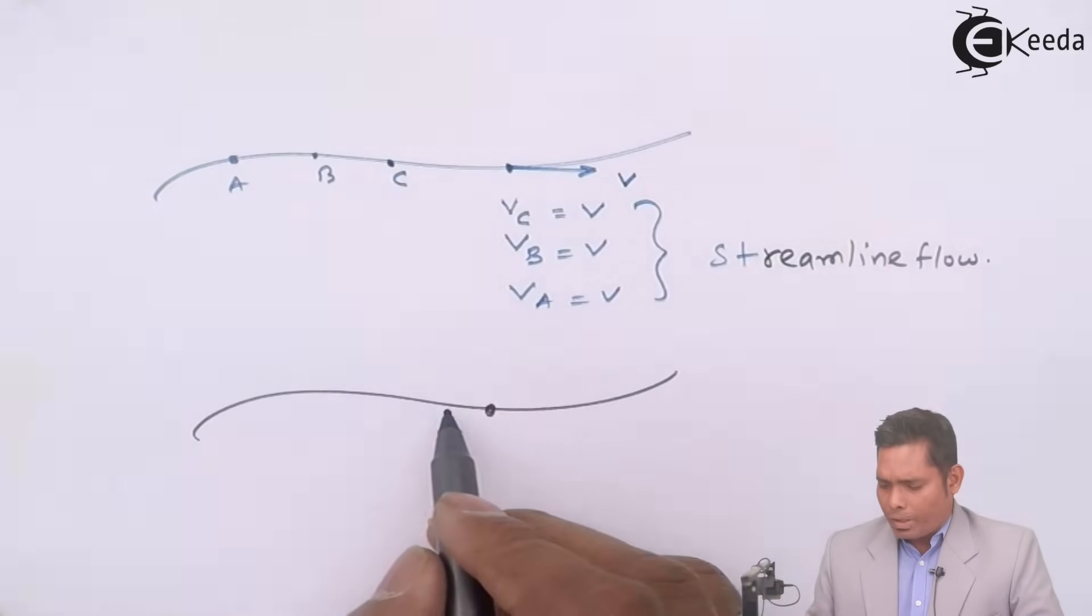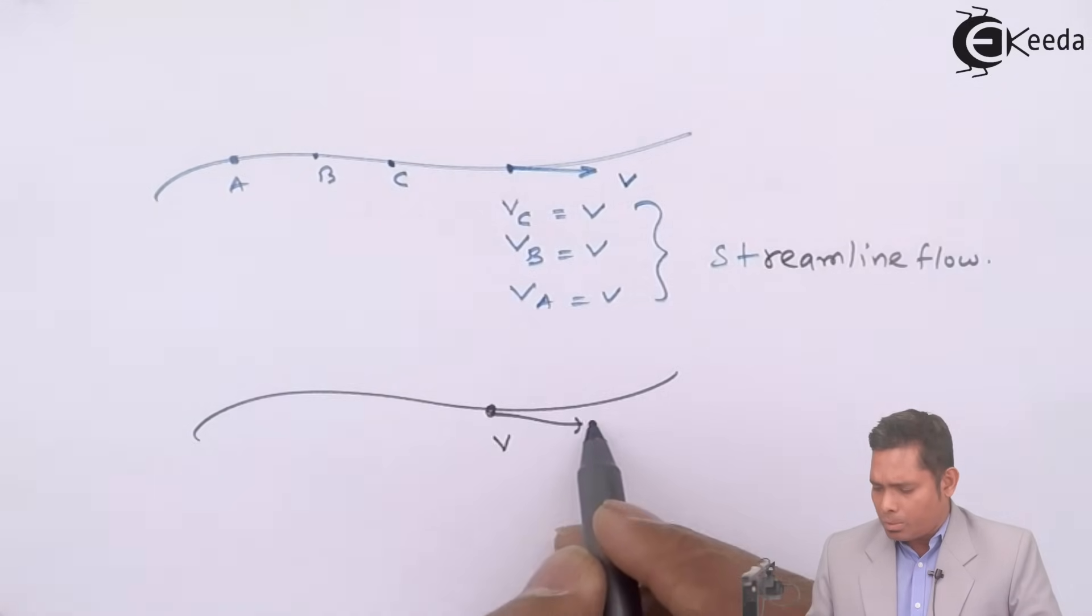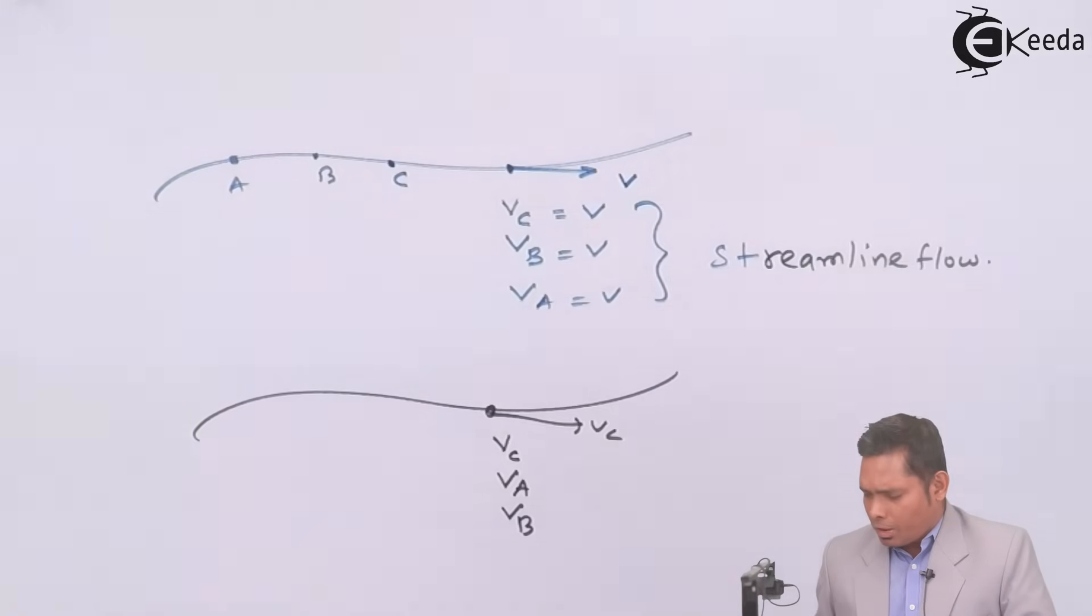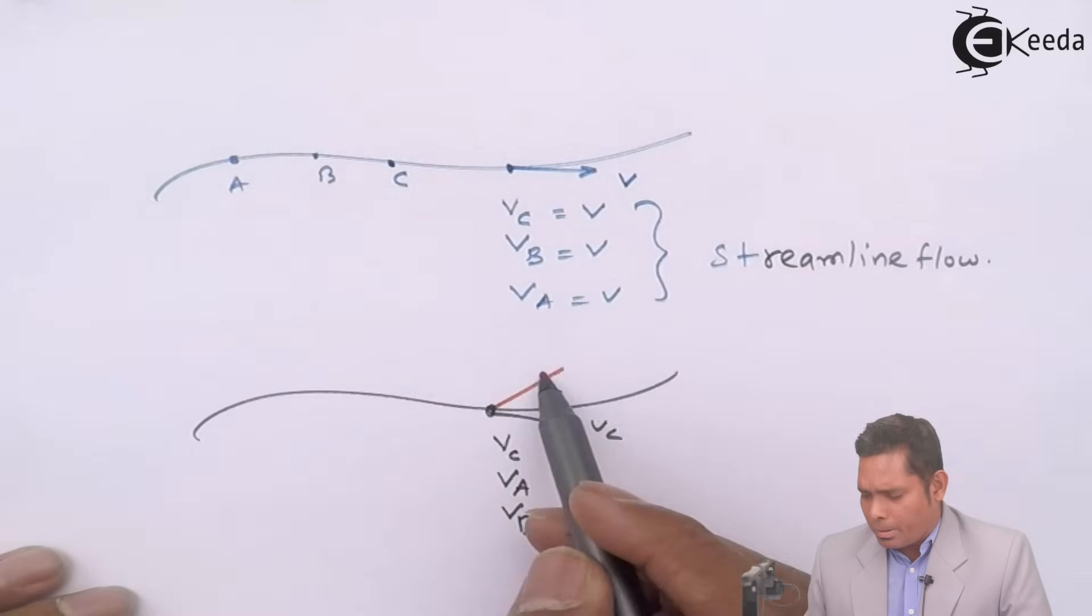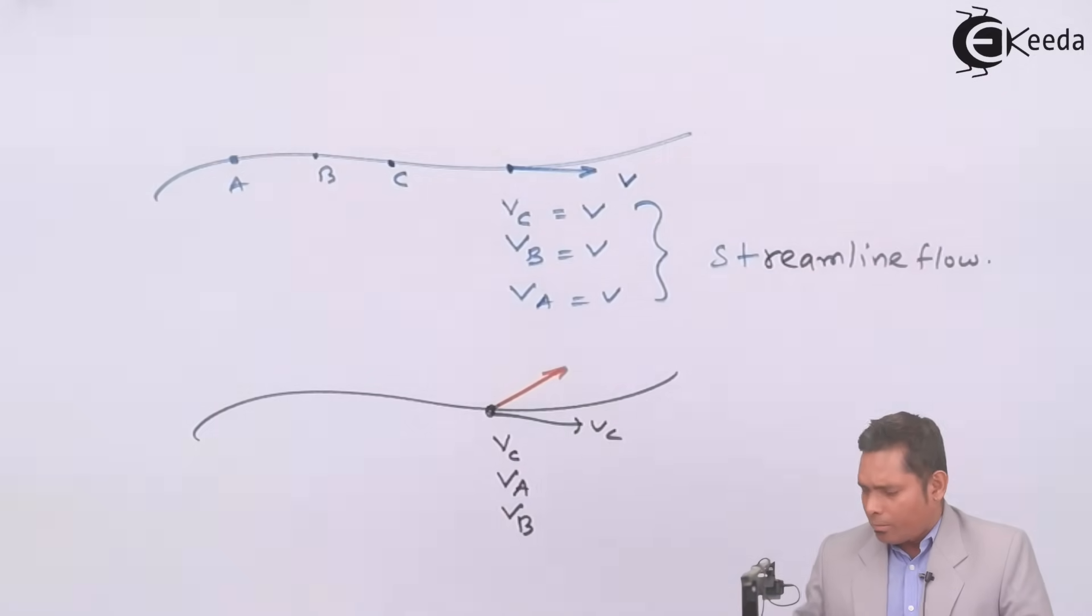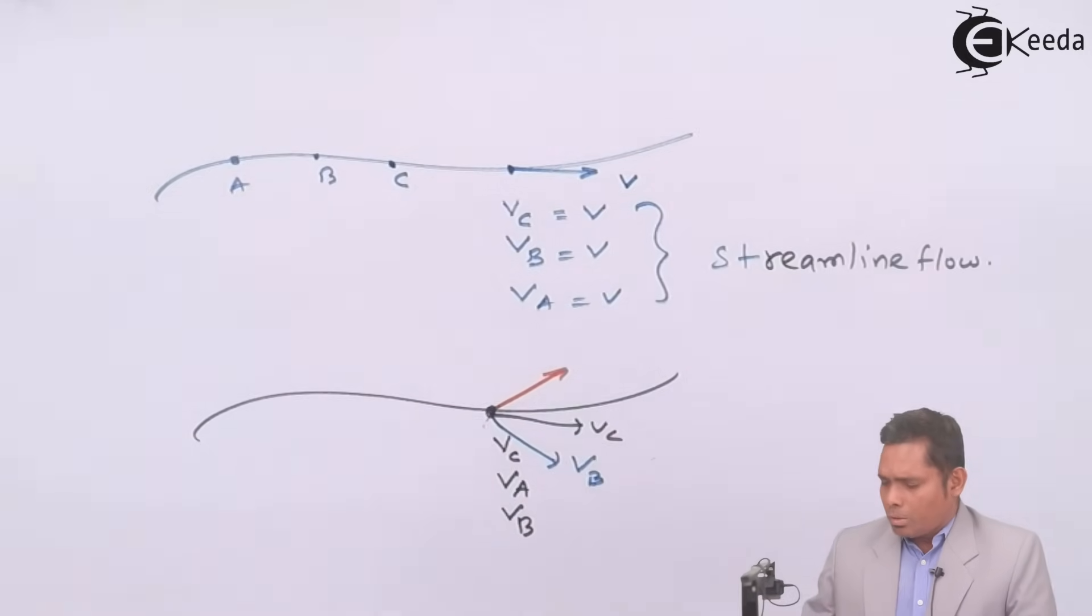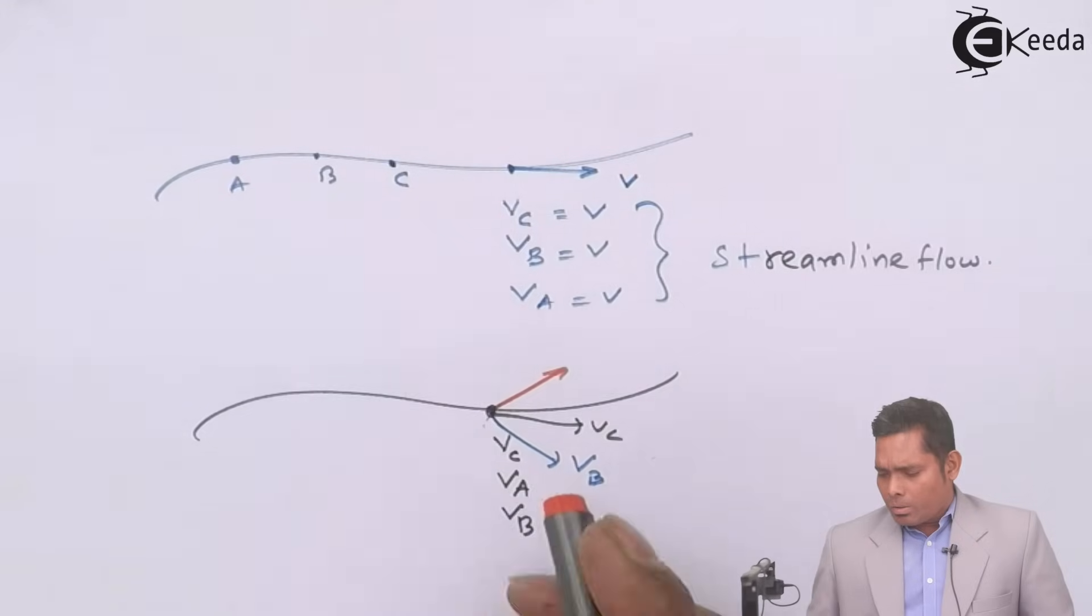But in case of turbulent flow at the same point, when C passes its velocity will be suppose vc, and when A passes va, B passes vb. Then if vc is like that, va might be in any direction and vb might be some other direction.